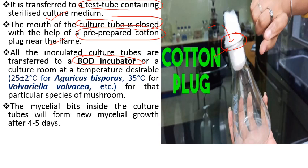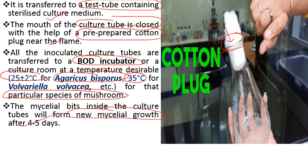For example, Agaricus bisporus grows best at 25 ± 2 degrees Celsius, and Volvariella volvacea at 35 degrees Celsius. After four or five days, mycelial bits inside the culture tubes will start forming new mycelial growth. We can then isolate these tissues and place them into another test tube containing culture medium, following the same procedure as pure culture preparation, to obtain the pure culture of that mushroom.